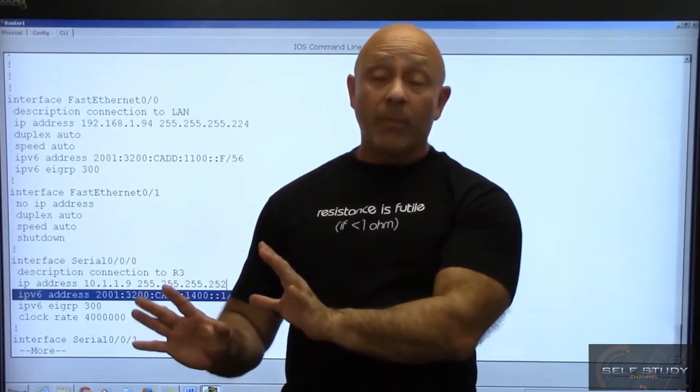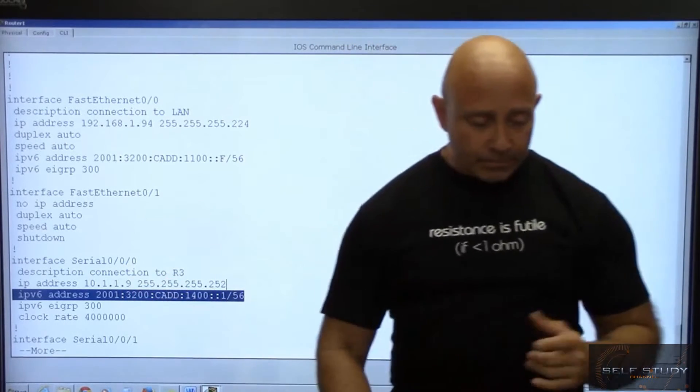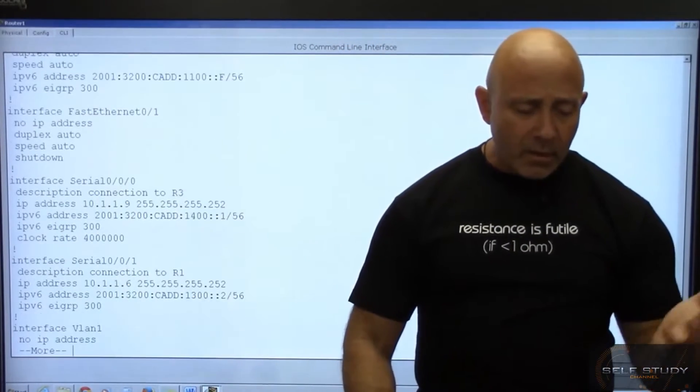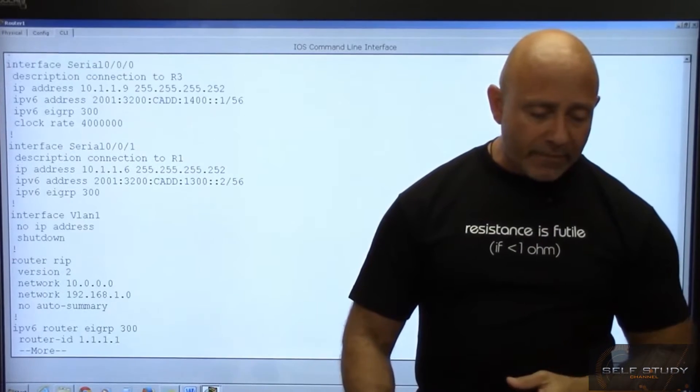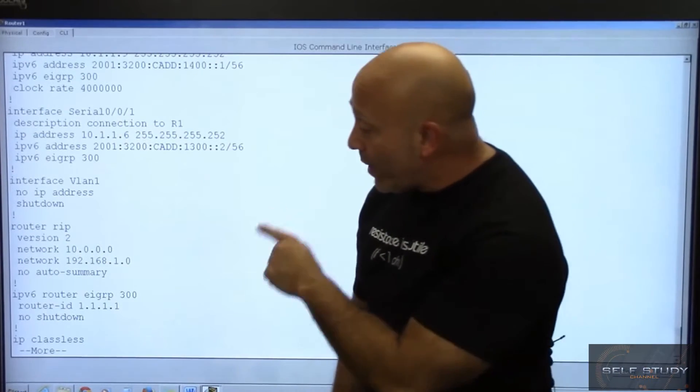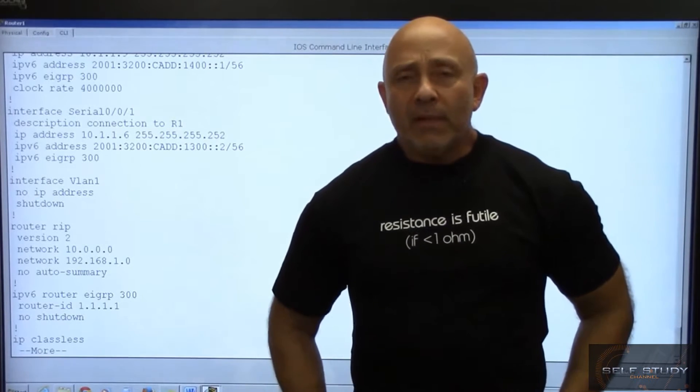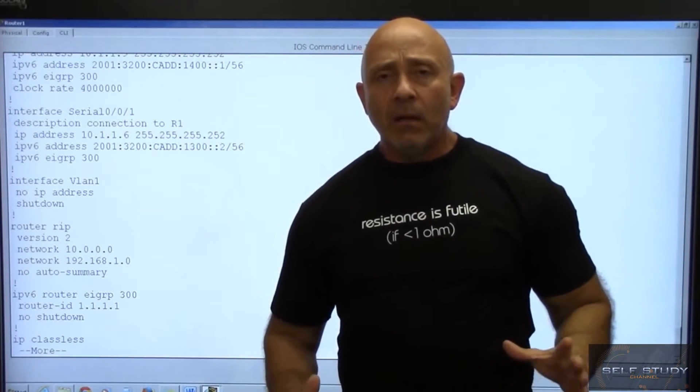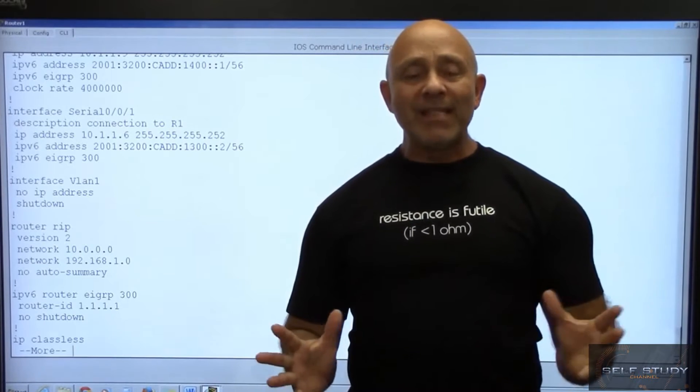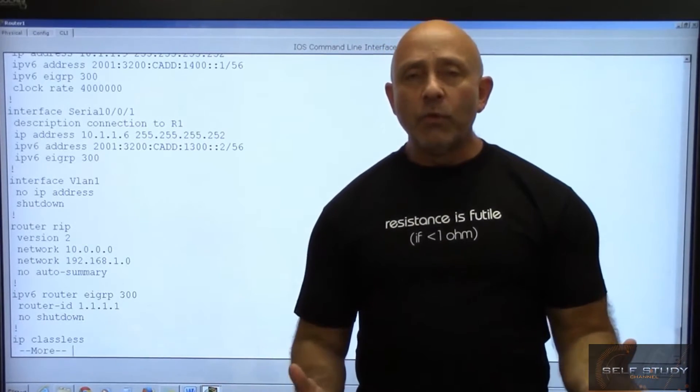We know already that we're using EIGRP just by looking at the interface. We go down, keep going down, there's your clock rates, the other interfaces, and we're also running RIP. You know, hey wait a minute, but isn't EIGRP the administrative distance 90?